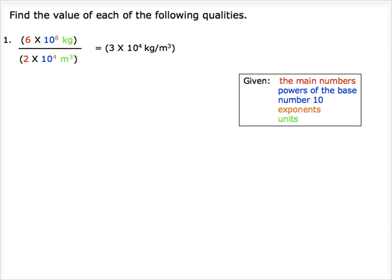In every problem, the numbers in red are the main numbers, the tens in blue are the powers of the base number 10 used in scientific notation, the numbers in orange are the tens' exponents, and finally, the units are in green.